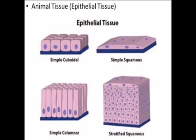Simple epitheliums are made up of a single cell layer, whereas stratified epithelium cells are arranged in many layers. Simple epitheliums are mainly of four types based on their shape: first, squamous epithelium; second, cuboidal epithelium; third, columnar epithelium; and fourth, ciliated epithelium.